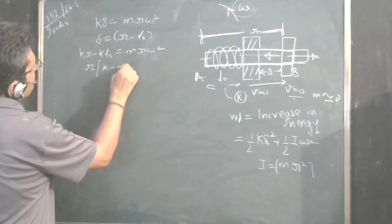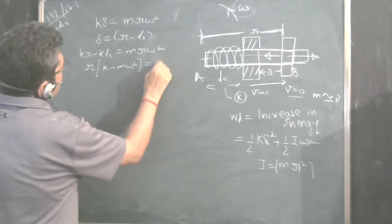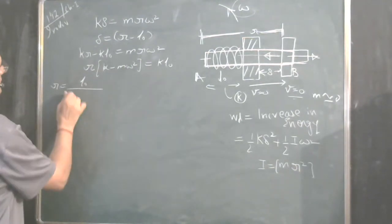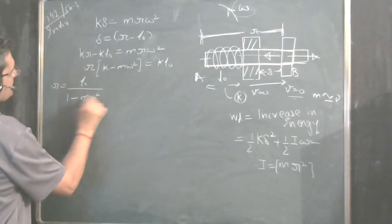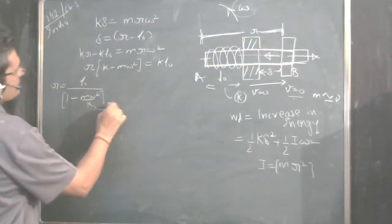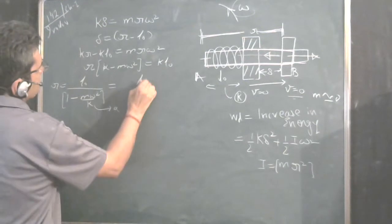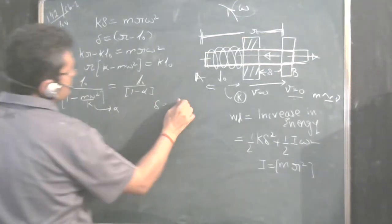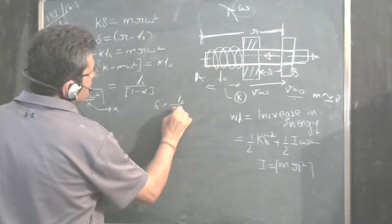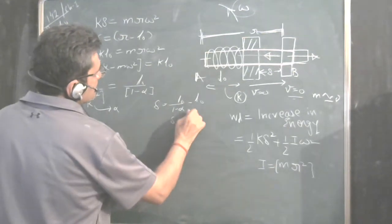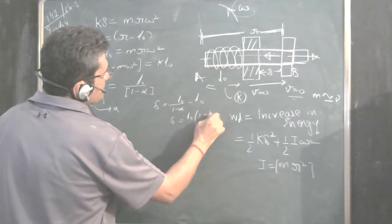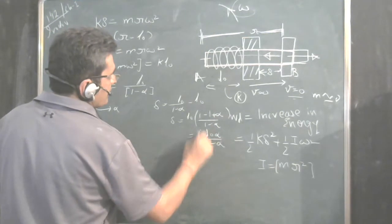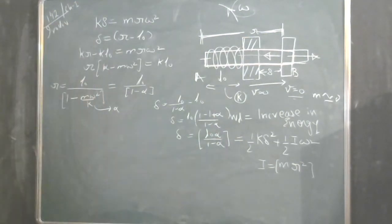From k·r minus k·L0 equals m·r·ω², rearranging gives r·(k minus m·ω²) equals k·L0, so r equals k·L0 divided by (k minus m·ω²), which simplifies to r equals L0 divided by (1 minus m·ω²/k). Let alpha equal m·ω²/k, so r equals L0 over (1 minus alpha). Then delta equals r minus L0 equals L0/(1 minus alpha) minus L0, which gives delta equals L0·alpha divided by (1 minus alpha).